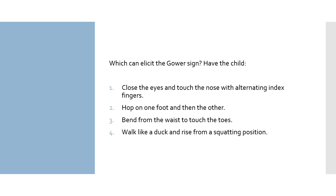Here's the next question. Which can elicit the Gower sign? Number one: close the eyes and touch the nose with alternating index fingers. Number two: hop on one foot and then the other. Number three: bend from the waist to touch the toes. Number four: walk like a duck and rise from a squatting position. To answer this question, you need to know what the Gower sign is testing for and how the test is done.